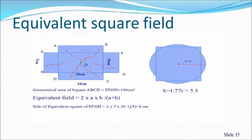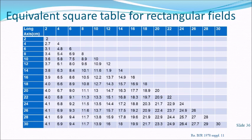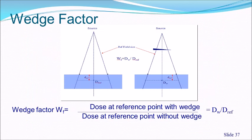To determine the equivalent square for any rectangular field, use the equation 2ab/(a+b), or alternatively consult the equivalent square table from BJR Supplement 11. For a 5×20 field (long axis 20, short axis 5), the table gives a value between 6.7 and 9, which by interpolation comes to approximately 7.8–7.9 cm — consistent with the calculated value of 8 cm from the equation.